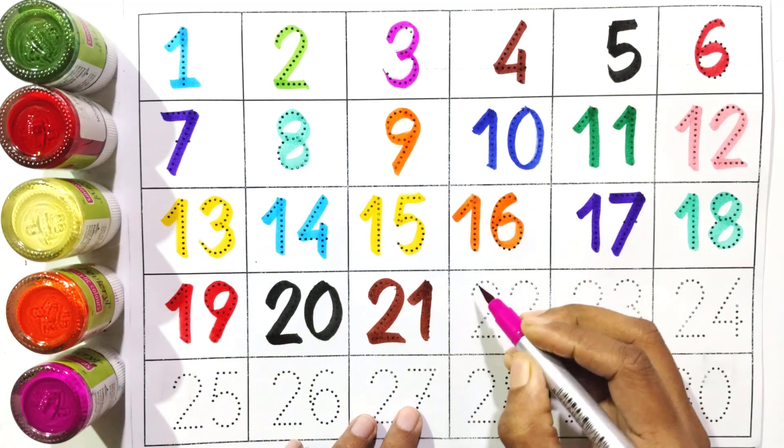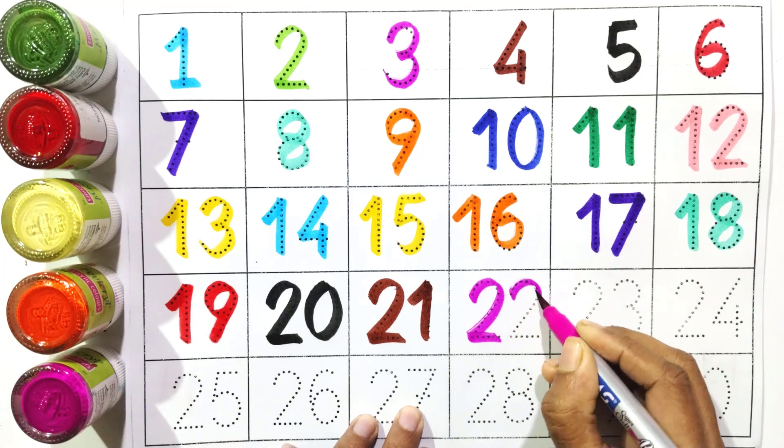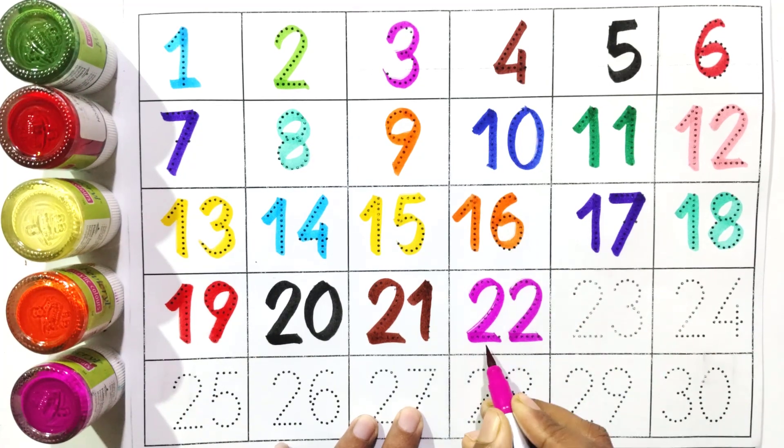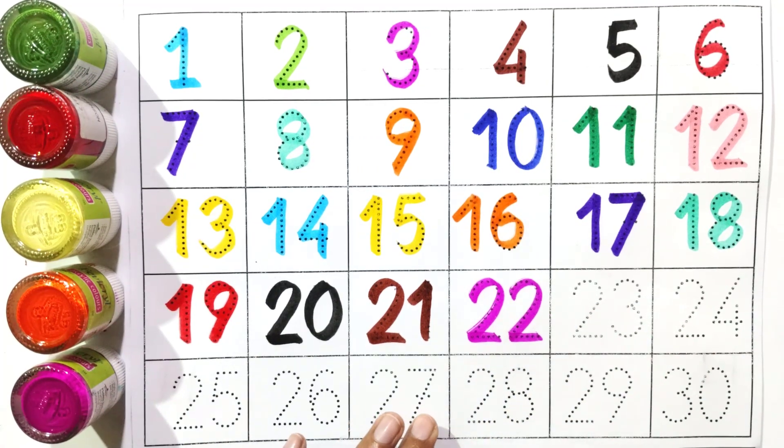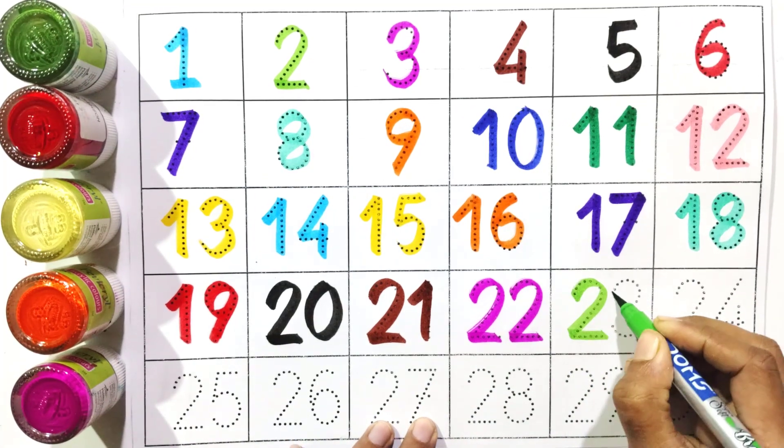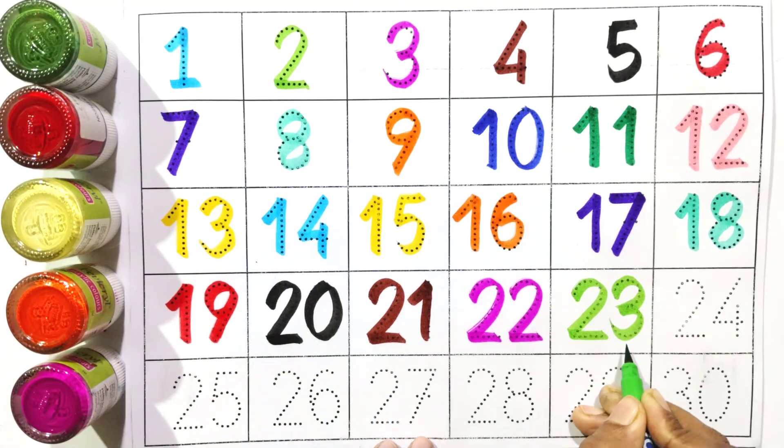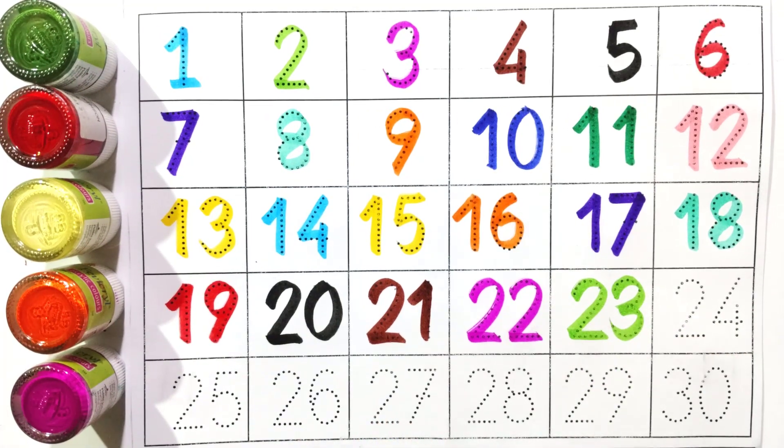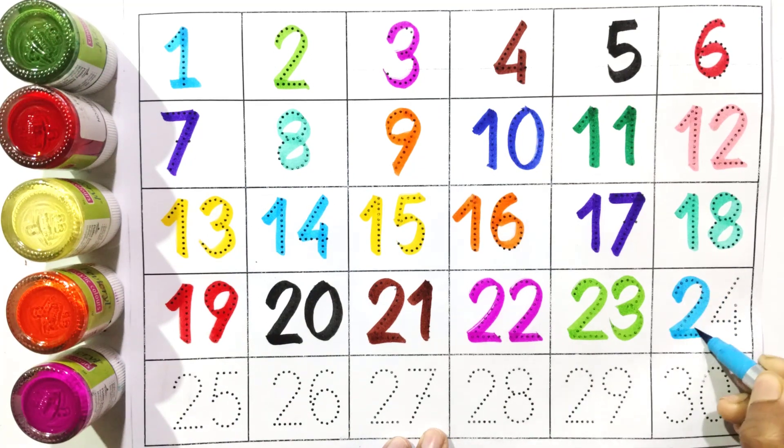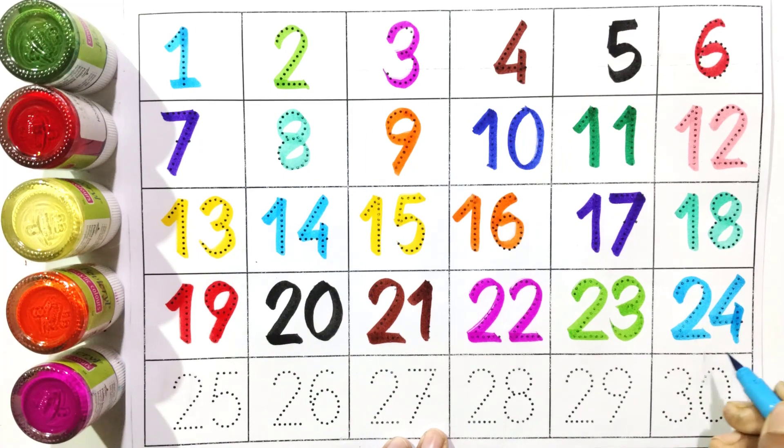Two and two: twenty-two. Two and three: twenty-three. Two and four: twenty-four.